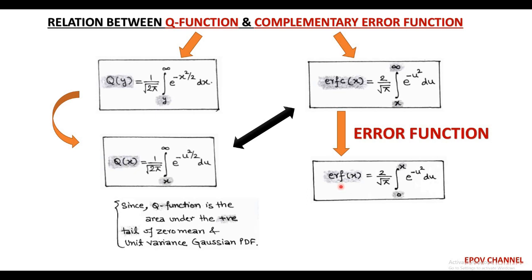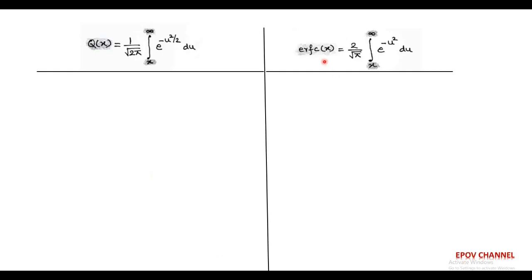The complementary error function is obtained by taking the limit from u = x to plus infinity, which is the same as the Q-function — the area under the positive tail of the zero-mean, unit-variance Gaussian PDF. Now we are ready to find the relationship between the Q-function and the complementary error function as well as the error function.